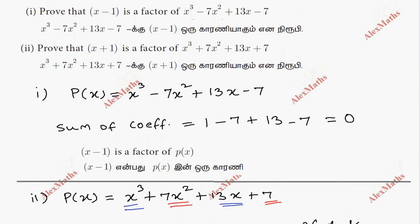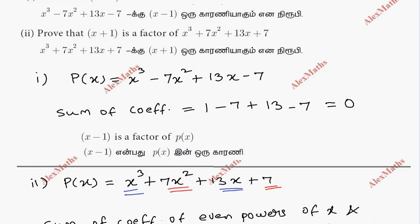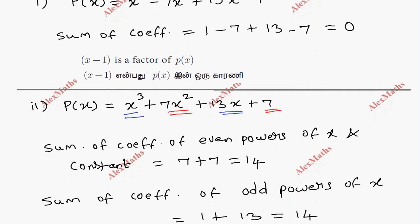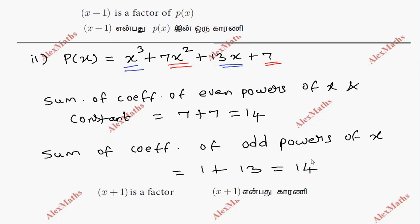Sum of coefficient of even power of x and constant term. Total coefficient of odd power of x is equal to x plus 1 factor.